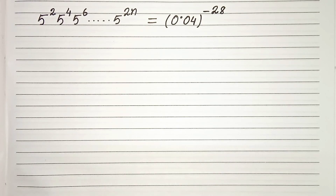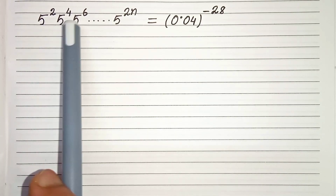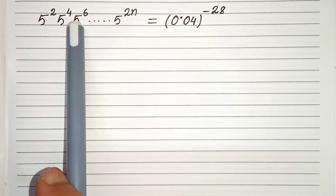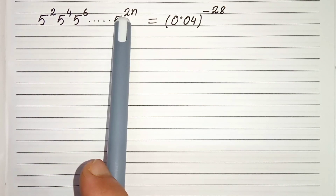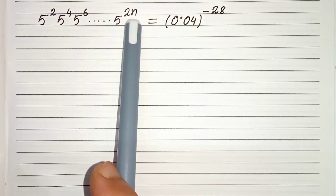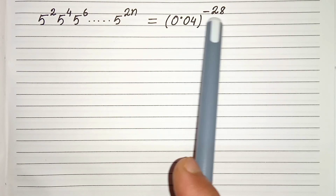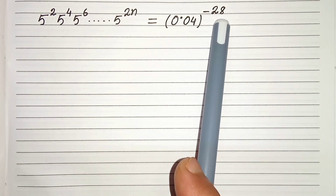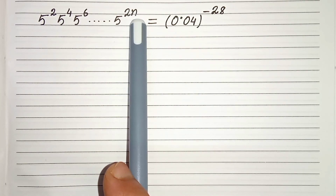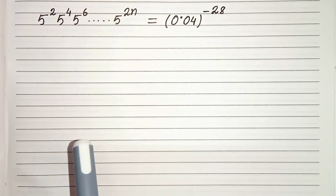Hello everyone. In this video we have 5 squared times 5 to the power 4 times 5 to the power 6, and so on, times 5 to the power 2n, equals 0.04 whole to the power minus 28. We have to find the value of n. So let's start.